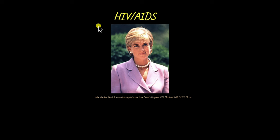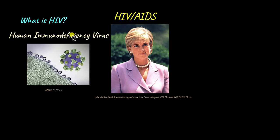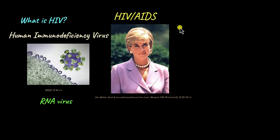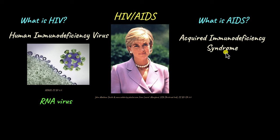First of all, we will begin with the most basic question: what is HIV? HIV stands for the Human Immunodeficiency Virus. It's a type of virus, specifically an RNA virus — it has the RNA genome inside it. This virus is capable of causing a disease that affects humans, and when that disease progresses to a severe stage, that is what is known as AIDS. AIDS stands for Acquired Immunodeficiency Syndrome. It's a syndrome because it's not just one disease — it's the presence of multiple diseases at the same time, which severely affects the patient to the point that it can lead to death.